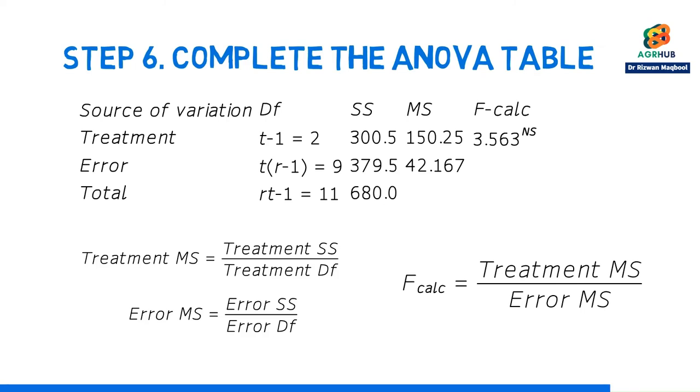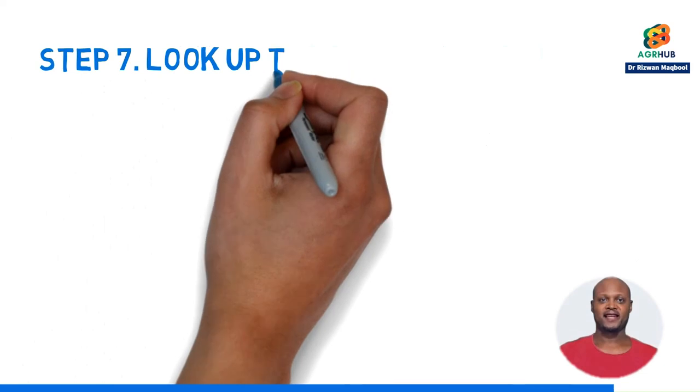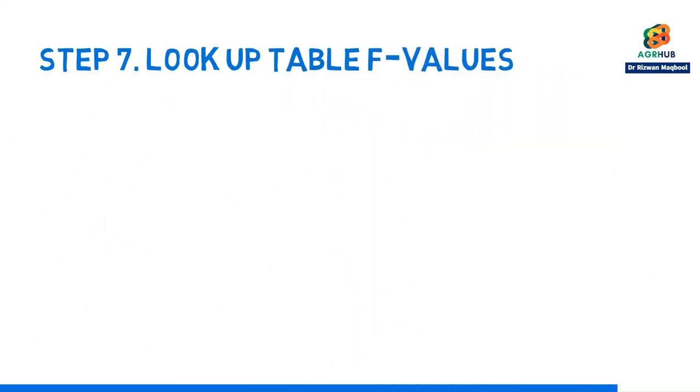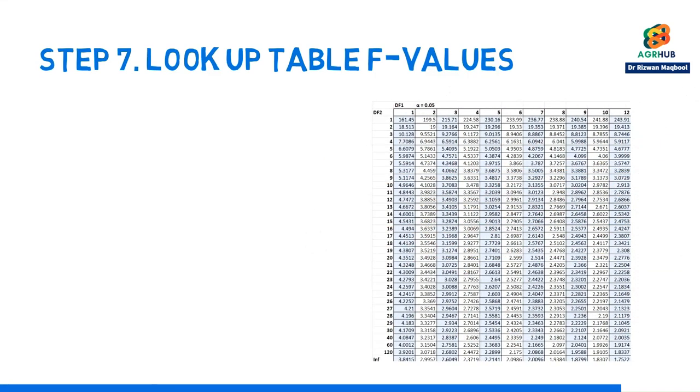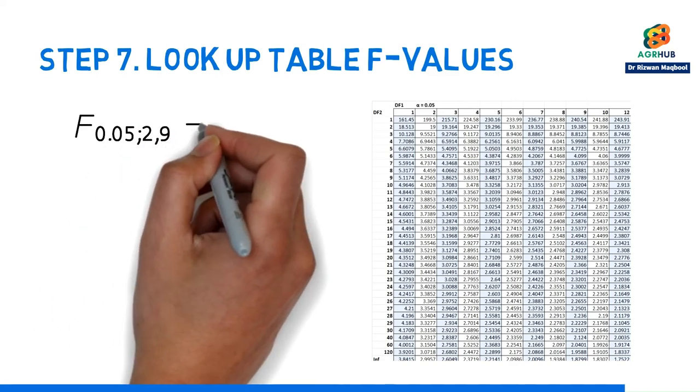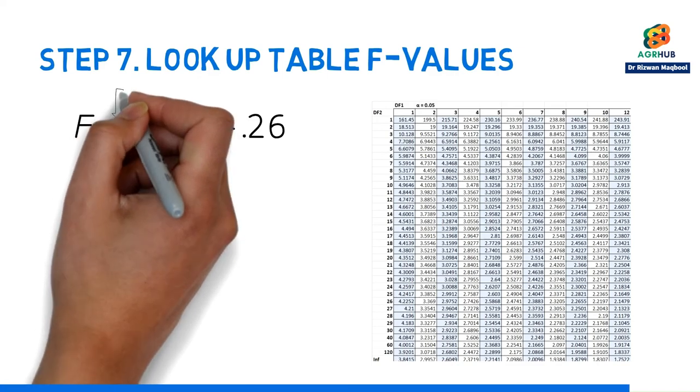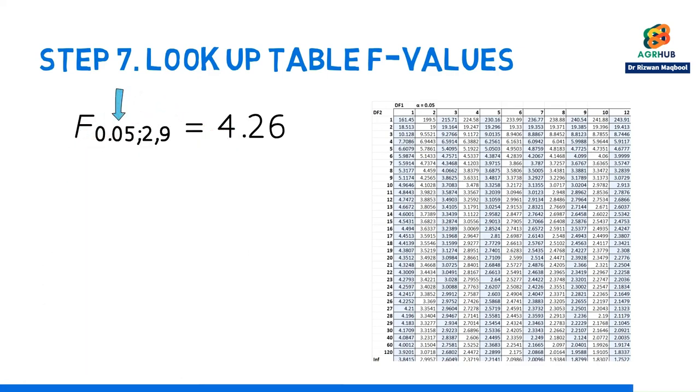What do we do after our test? Step 7. Look up table F values. We take that value and compare it to a critical value. To do that, we look for the F critical value from our F table. First thing we need to do is figure out the alpha for the problem.